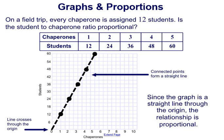So here we have our situation. On a field trip, every chaperone is assigned 12 students, and we want to find out, is the student to chaperone ratio proportional? So we have our values in a table. When there was one chaperone, there's 12 students, two chaperones, 24 students, three chaperones, 36 students, and so on.